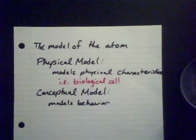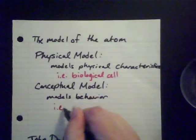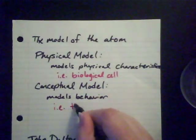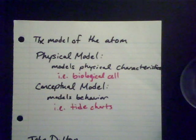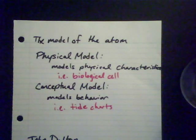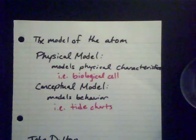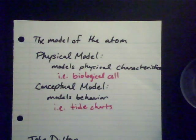A conceptual model models the behavior of a system. An example could be something like tide charts or weather patterns. If you've ever looked at tide charts for the oceans, you've seen that they show the pattern of how the water moves, how the tides flow. It's not actually modeling what the ocean looks like — it's modeling the behavior. How does it move?